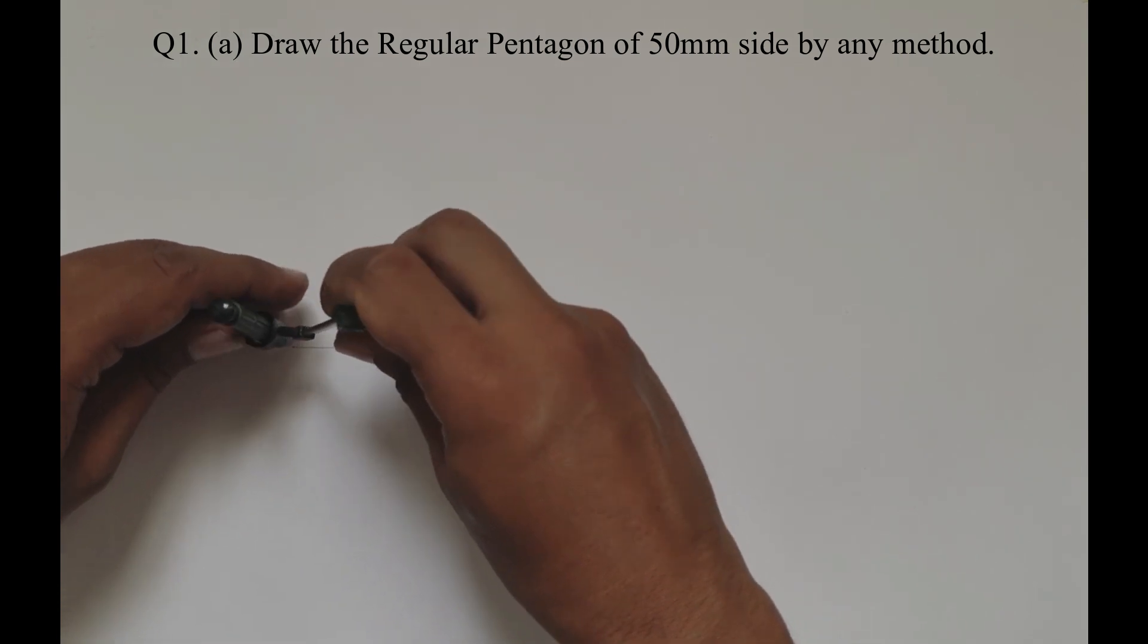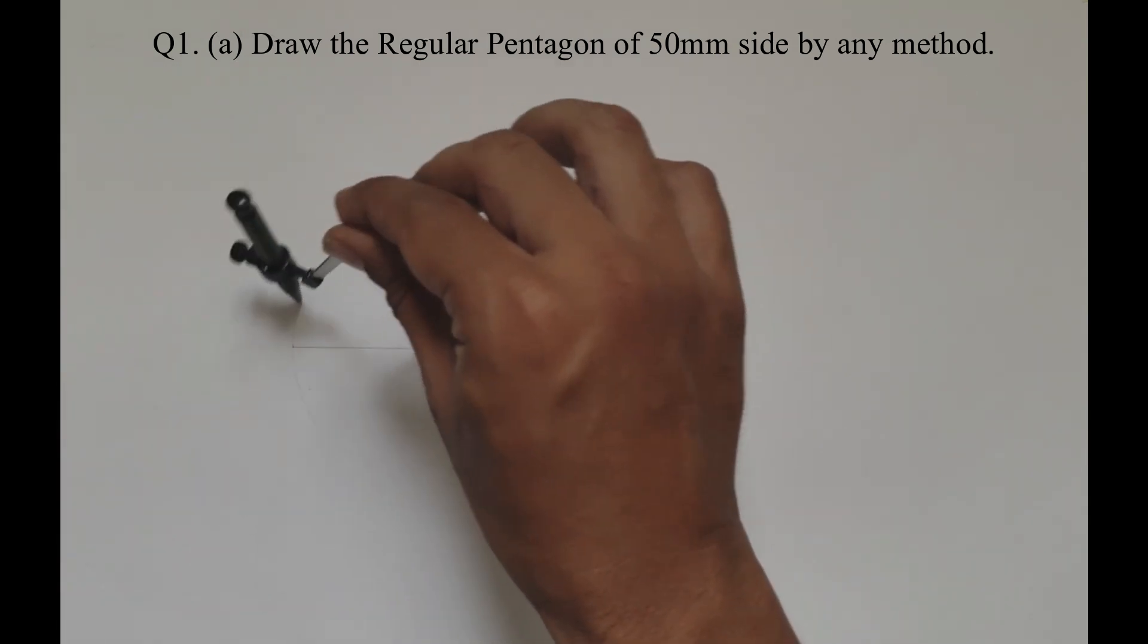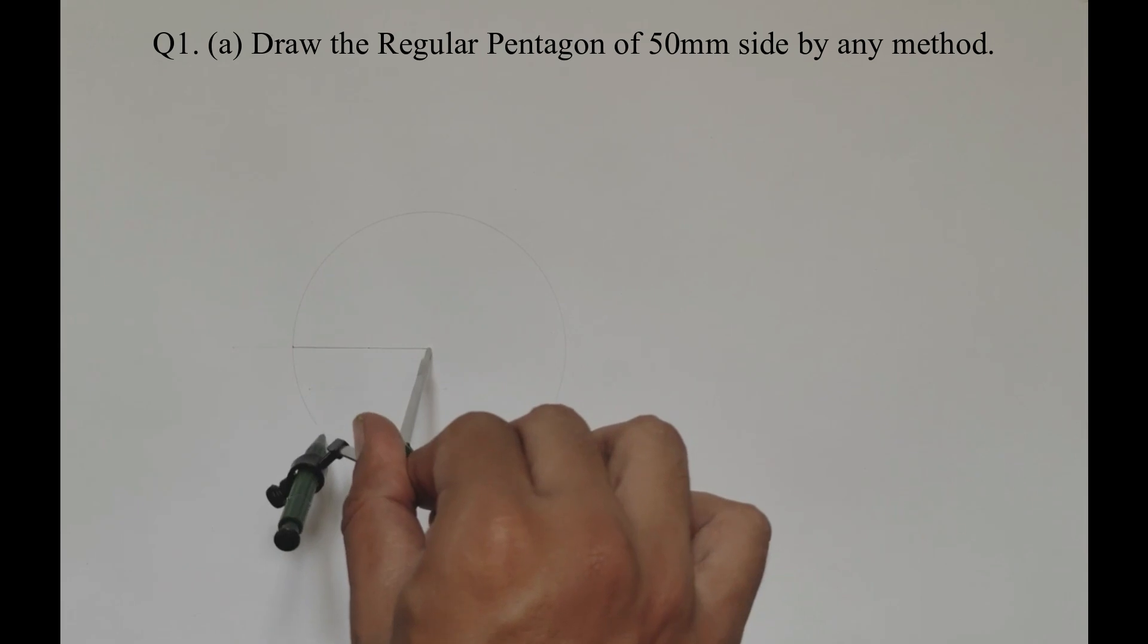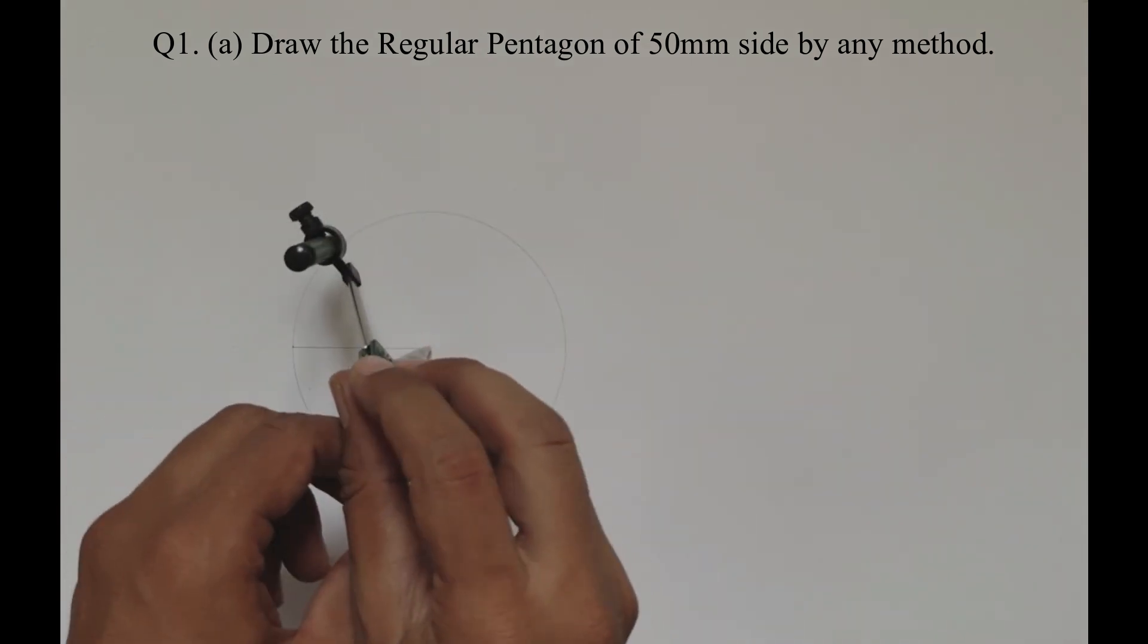Now you have to take radius equal to 50mm in your compass. Keeping the end of the line as the center, draw a circle.